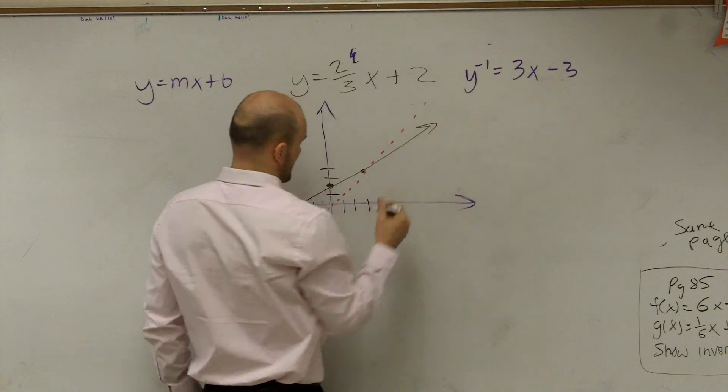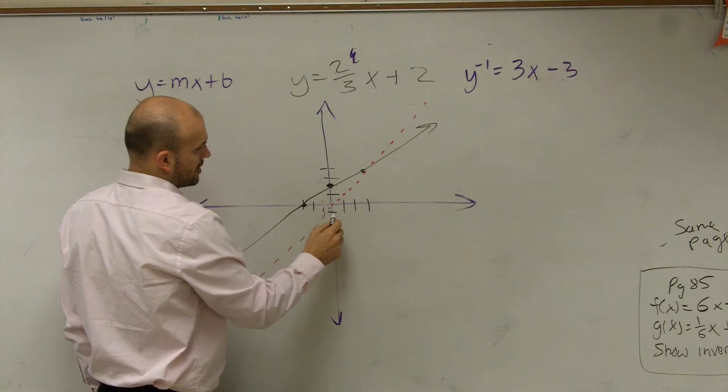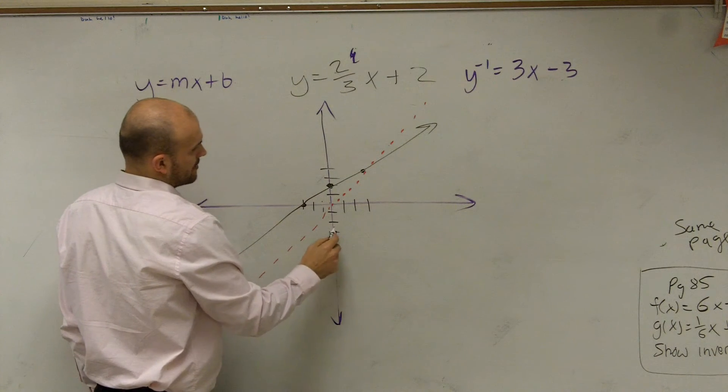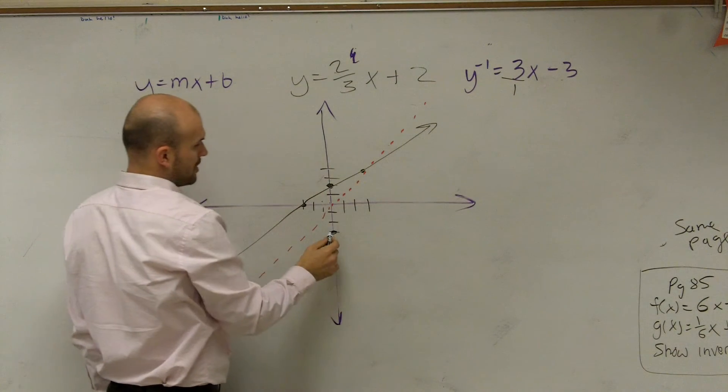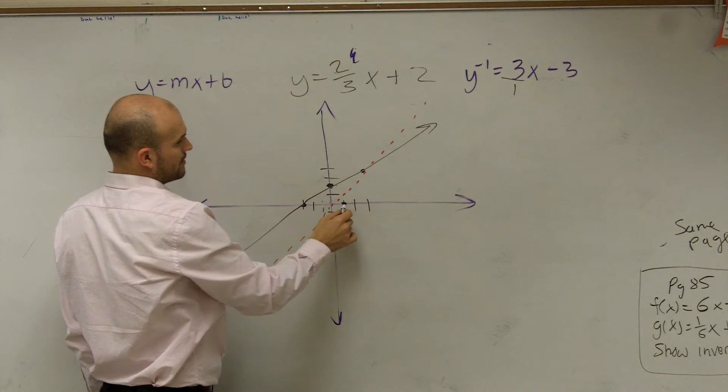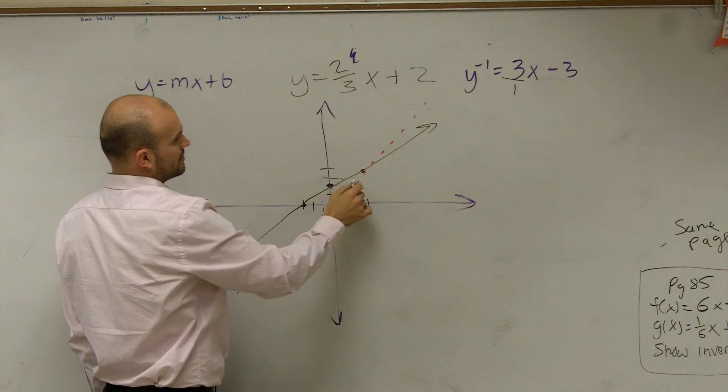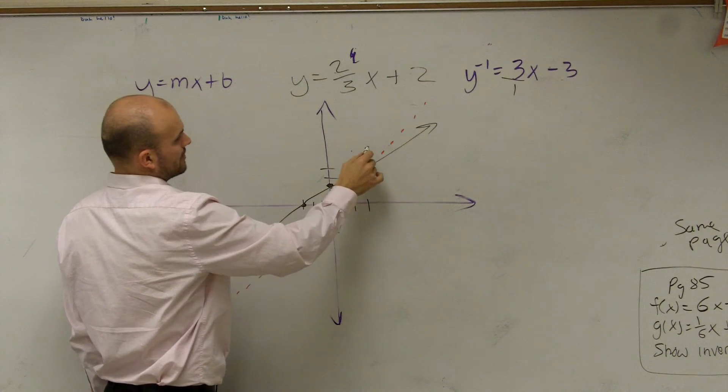So here, I have a y-intercept of negative 3. So I go down to 3. Then my slope is now 3 over 1. So I go up 3, over 1. Up 3, over 1. Up 3, over 1.